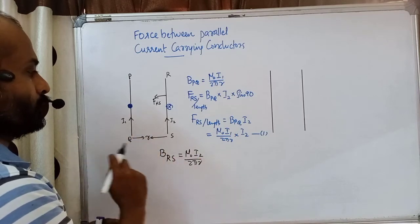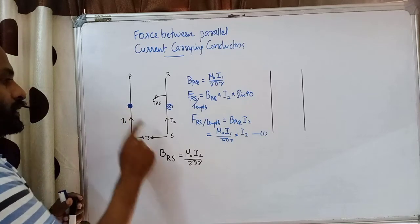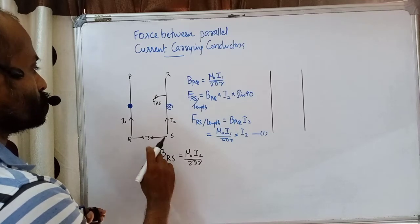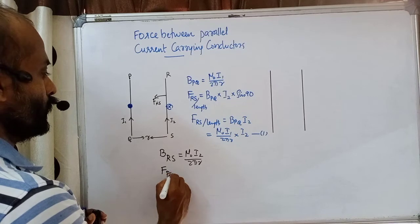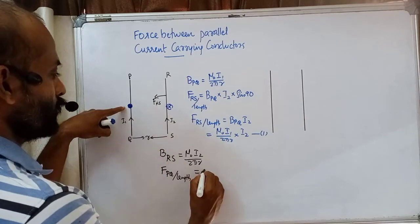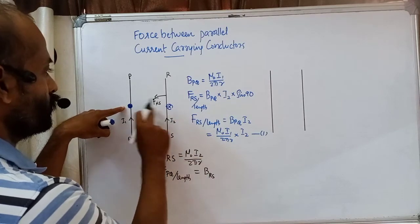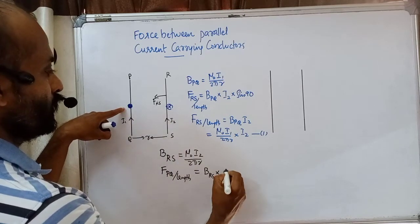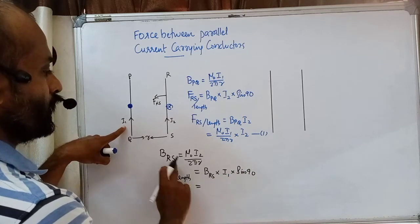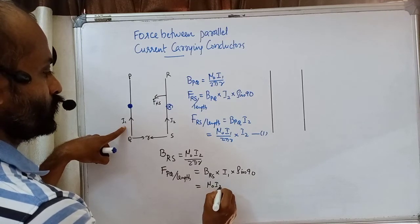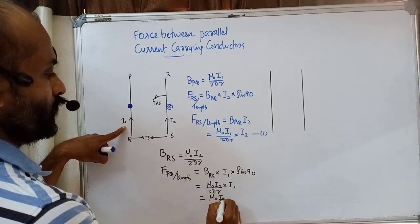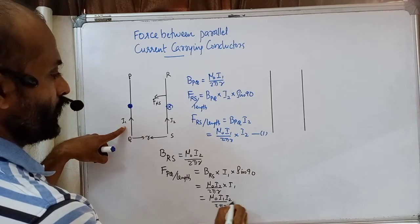Conductor PQ is in the magnetic field of RS and will experience a force. Force on PQ per unit length equals B_RS multiplied by i1, with sinθ equal to 1. Substituting B_RS as μ₀i₂ divided by 2πr, the force on conductor PQ per unit length equals μ₀i₁i₂ divided by 2πr. This is Equation 2.